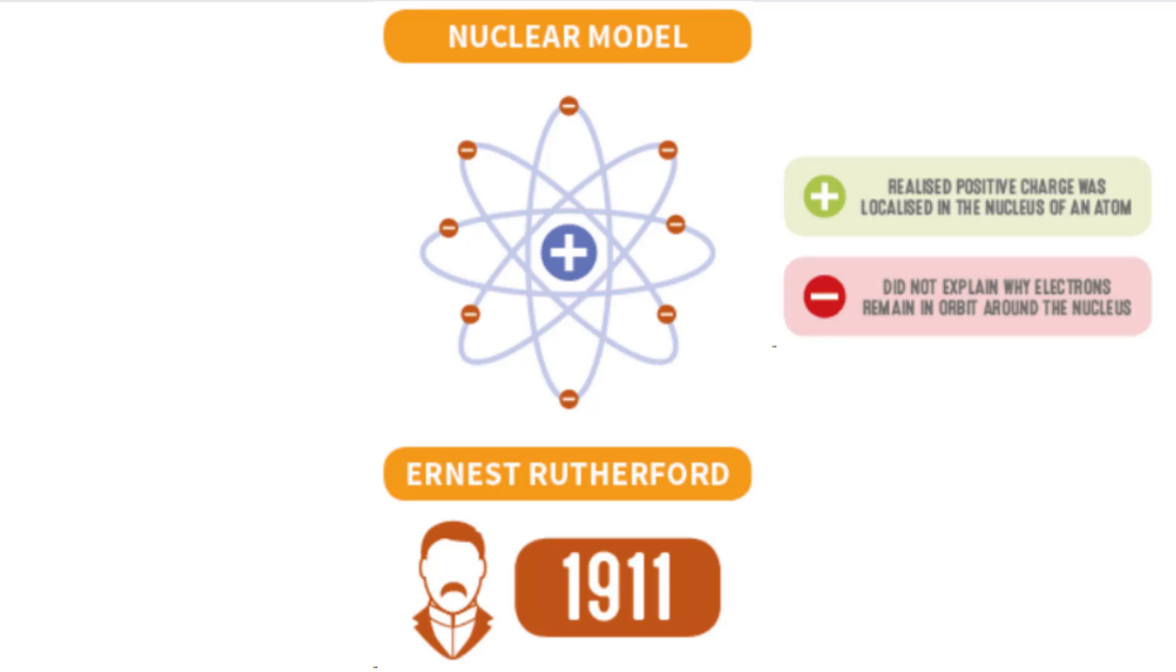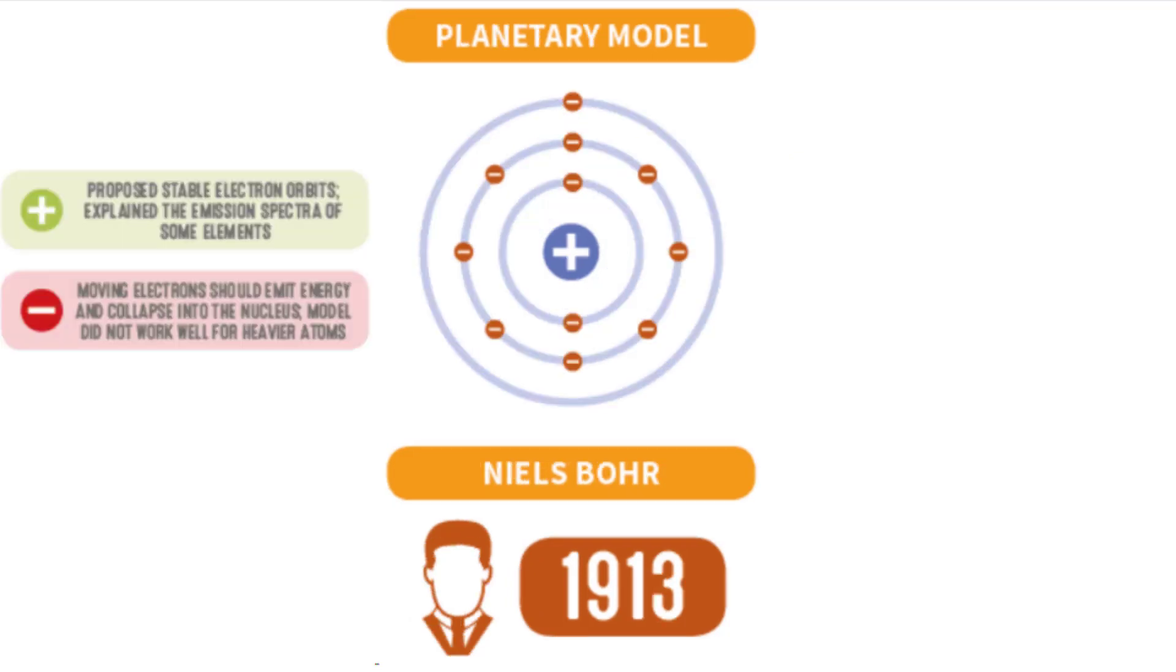And that brings us to the Bohr model, or the planetary model, which proposed that these electrons were in orbits, kind of like, kind of a solar system model. But the problem was, we knew these electrons jumped specific quantum or energy levels from scientific experimentation, but we didn't know,